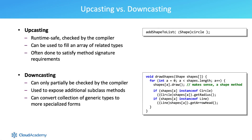Let's now consider upcasting versus downcasting. Upcasting is runtime safe, checked by the compiler, can be used to fill an array of related types, and is often done to satisfy method signature requirements. We can always upcast, because when we do so we lose access to specialized behavior.